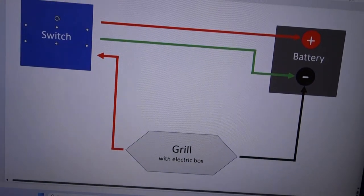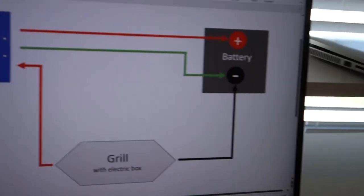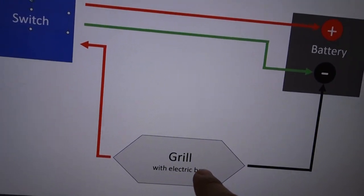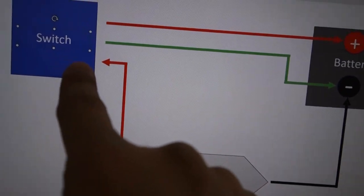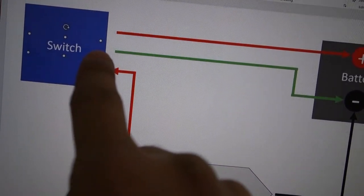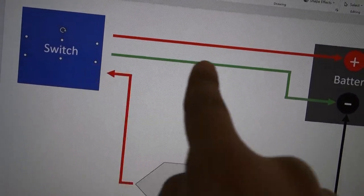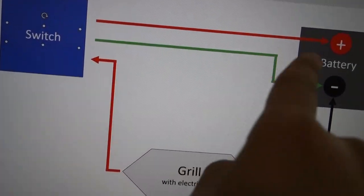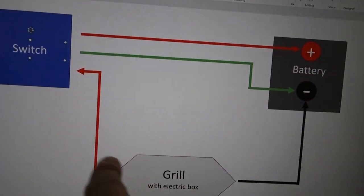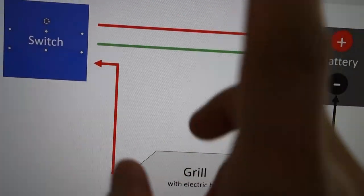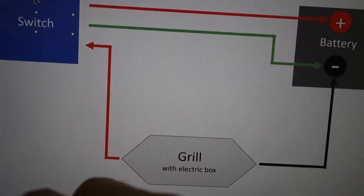That's basically it. The grill electrical box - one goes to the negative, one goes to the switch. From the switch you get two wires - one wire goes to the negative and one wire goes to the positive. That completes the circuit to having the switch of the grill lights on command.